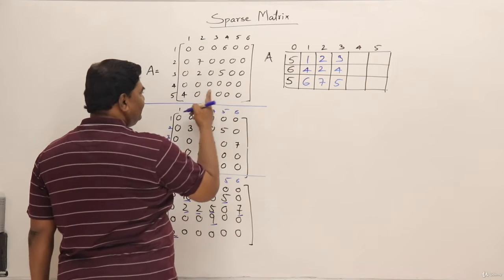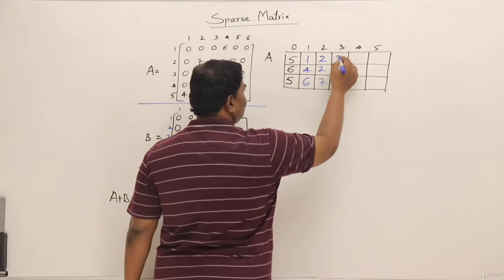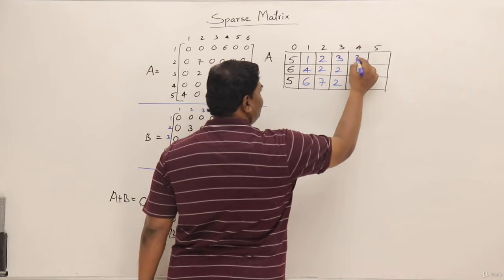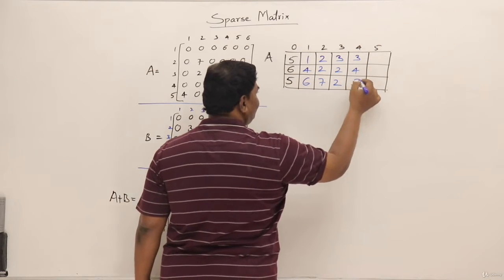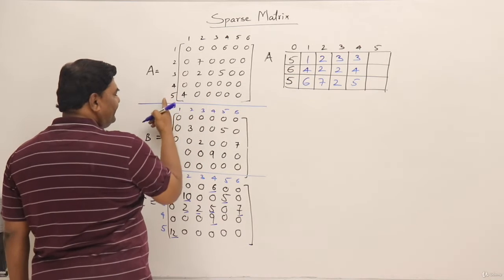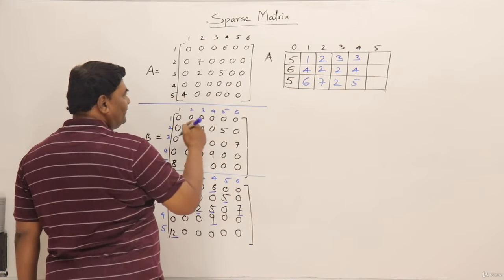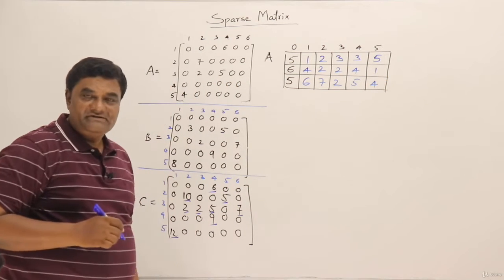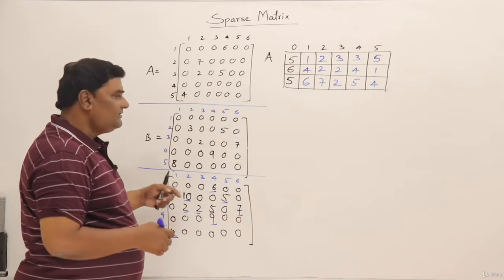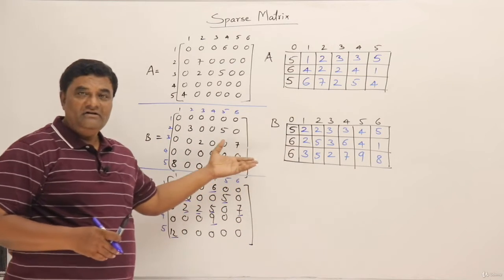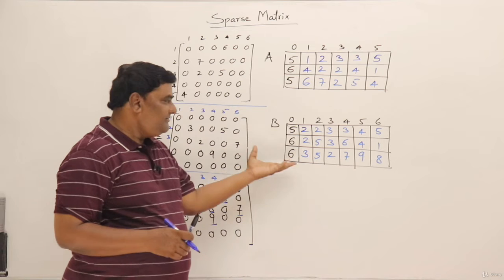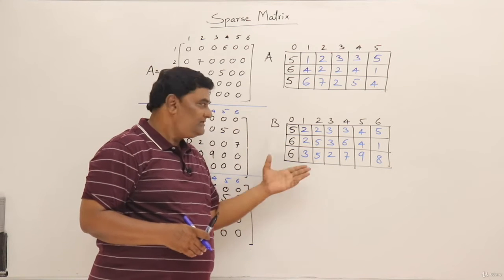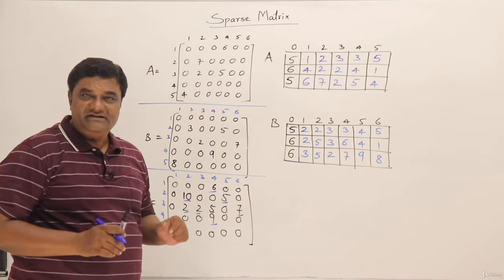Continuing to fill the coordinate list for A: row 3, column 2, value 2; row 3, column 4, value 5; row 5, column 1, value 4. This is how matrix A is represented. Similarly, the representation for matrix B has 5 by 6 dimensions and 6 nonzero elements, all filled into its coordinate list table. Now let us see how addition can be done using these representations.